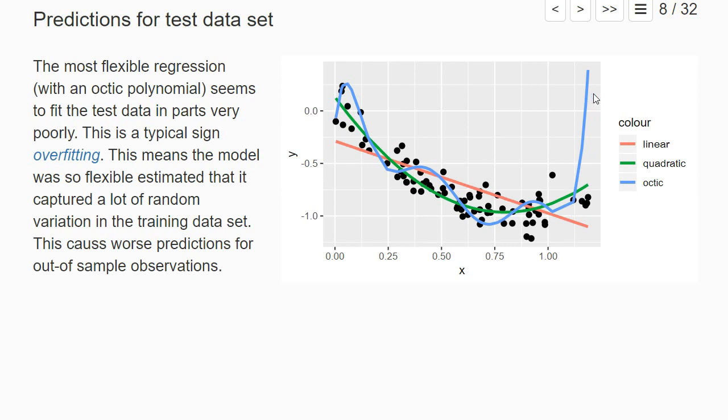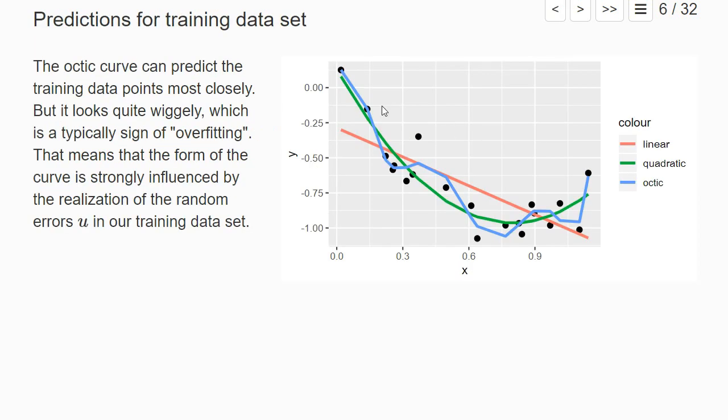the training data set, performs worse. In particular, here in the end it's pretty far off from the true values. This is a typical sign of overfitting - the octic curve was so flexible that it also fitted some noise in the training data set